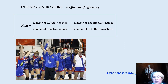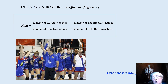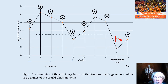For analysis of team efficiency we use integral indicators — the coefficient of efficiency. As you can see in this formula, we accumulate the number of effective actions and number of not effective actions, and after that we see the result for players of every position during the tournament, as shown in figure 1.